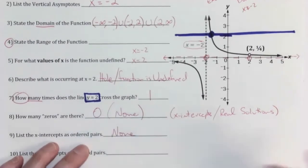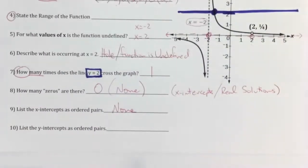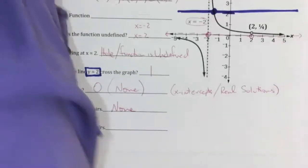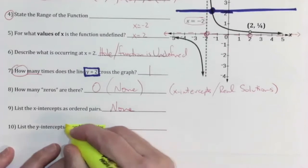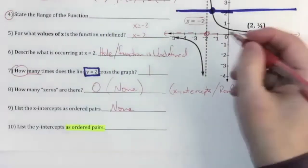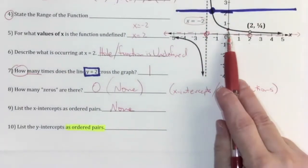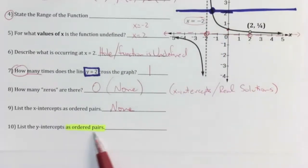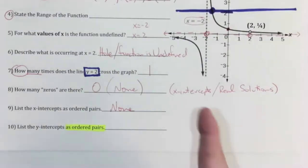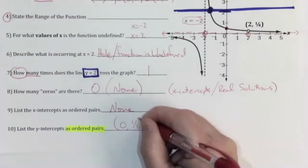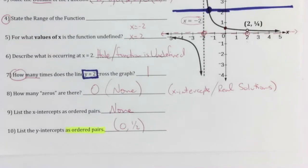Since there are no zeros, there are no x-intercepts — that was a straightforward question. For the y-intercepts, the part people miss is that the question asks for ordered pairs. The graph crosses the y-axis at one-half. If you just write one-half that's wrong because it's not an ordered pair. The correct answer is the ordered pair zero, one-half. That's probably the number one reason people miss these — they don't write it as an ordered pair.